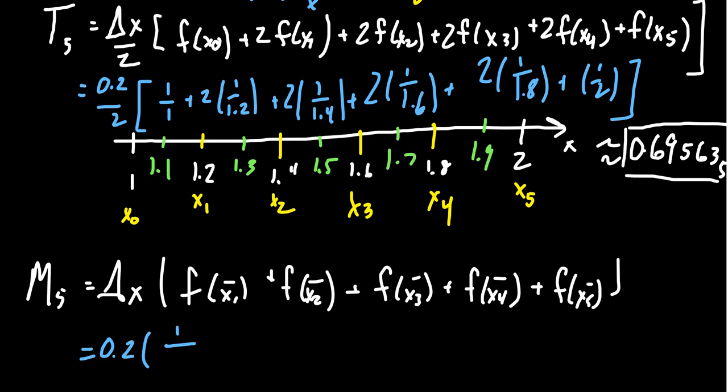We're going to do 1 over 1.1, evaluate the function at 1.1, plus 1 over 1.3, plus 1 over 1.5, plus 1 over 1.7, and then finally 1 over 1.9.